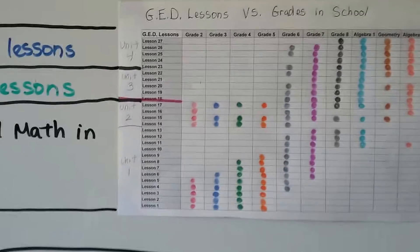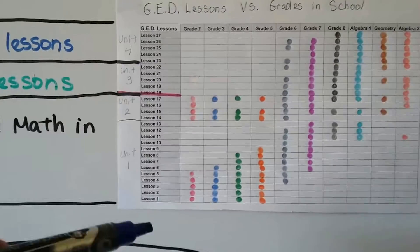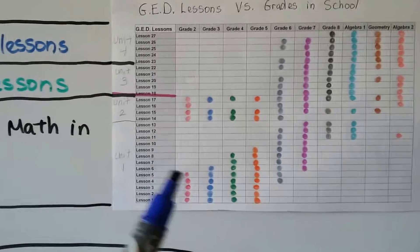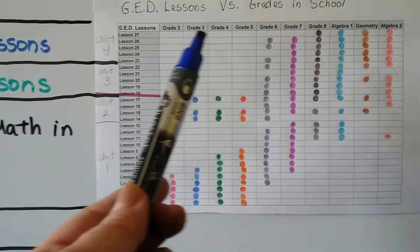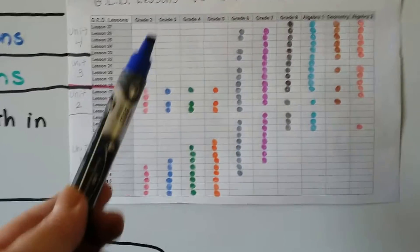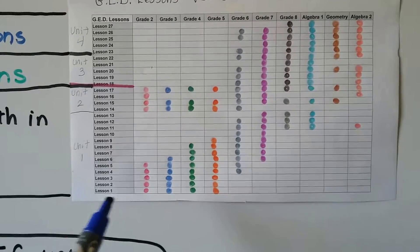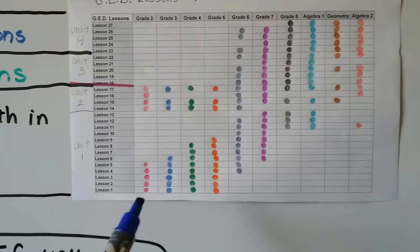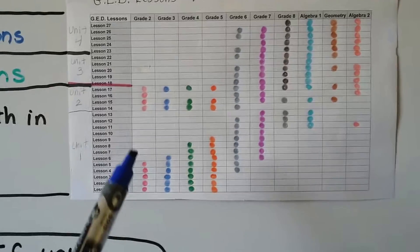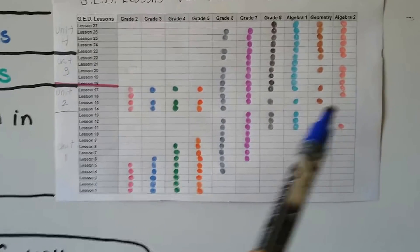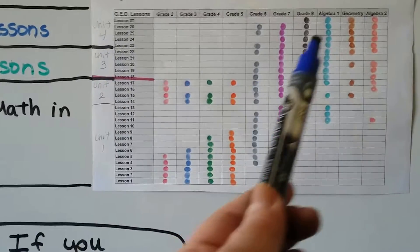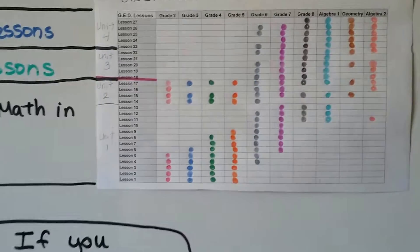So, more perspective. I've shown you this before during the playlist. There's 27 lessons in this Steck-Vaughn GED book. And if you look at these colorful dots, these are the grade levels that correlate with those lessons. So look, lesson one was like second, third, and fourth, and fifth grade. See that? And as the lessons went up, so did the grade levels. So that by the time we were doing unit three and unit four, it was all sixth grade or above. See that?